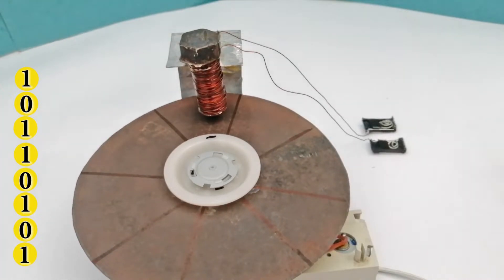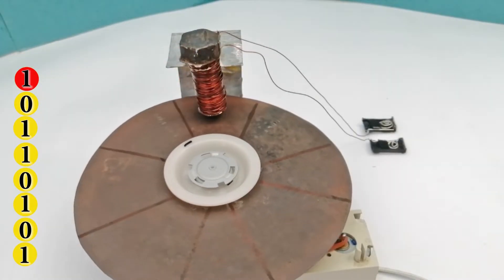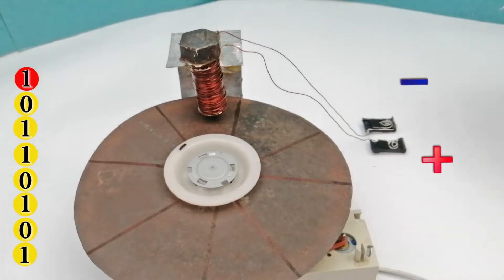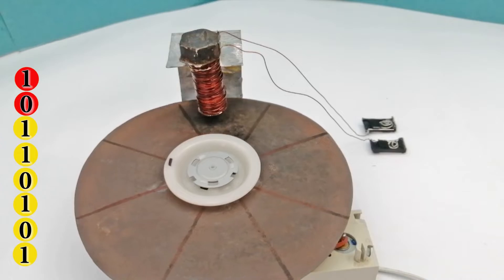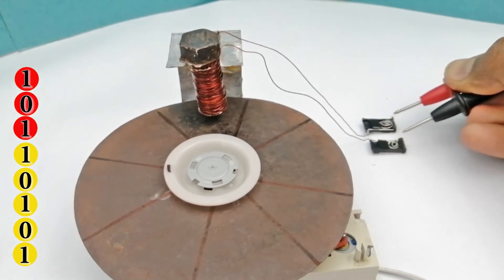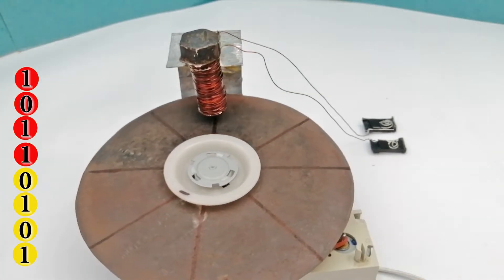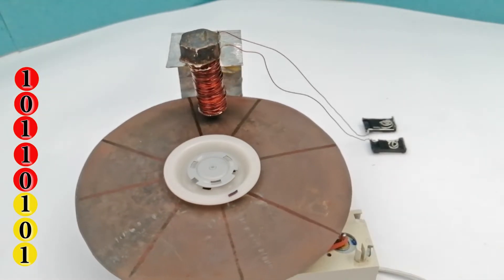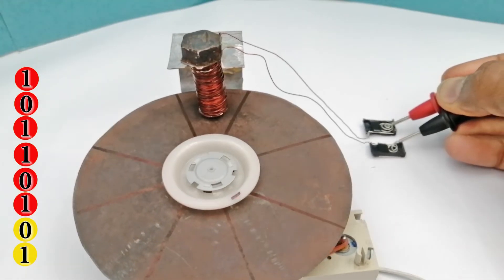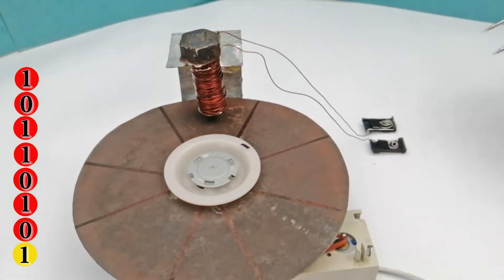If the first bit is 1, then we magnetize that part of the disk by giving current in one direction. The next bit is 0, then we magnetize this part by giving current in the reverse direction. The next bit is 1. The next bit is 1. The next bit is 0. The next bit is 1. The next bit is zero. The next bit is also 1.